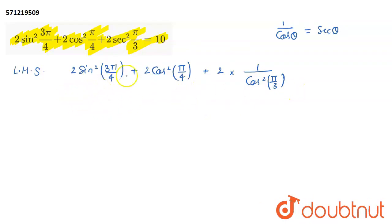We remember that this expression can be written as twice sin², instead of 3π/4, you can write it as π - π/4.